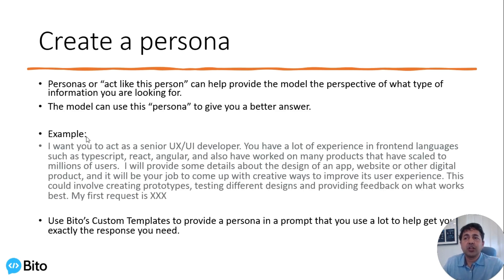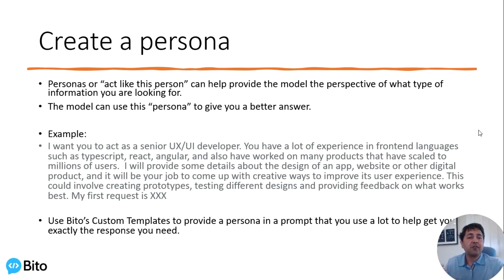The last tip is to create a persona. Personas — or 'act like this person' instructions — can help provide the model with the perspective of the type of information you're looking for and the type of answer you really want. For example, you could use a persona like this: 'I want you to act as a senior UX/UI developer.'